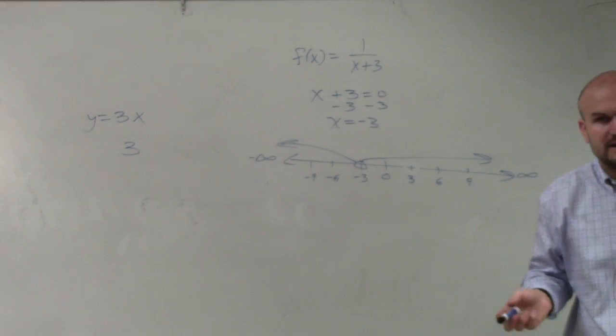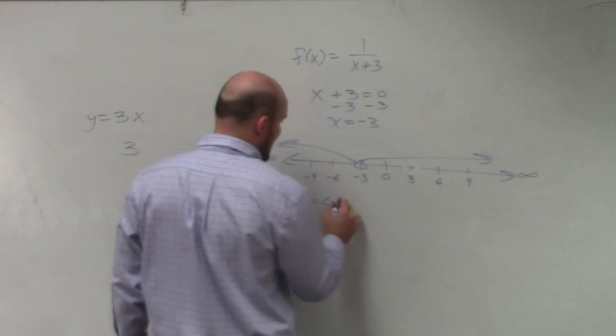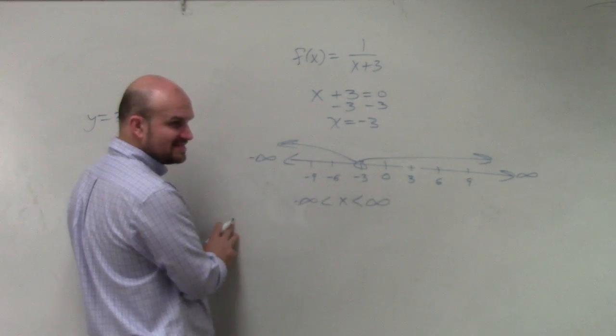So as an inequality, that's what that looks like. You could say negative infinity is less than x, which is less than infinity. That's how we'd write it as inequalities.